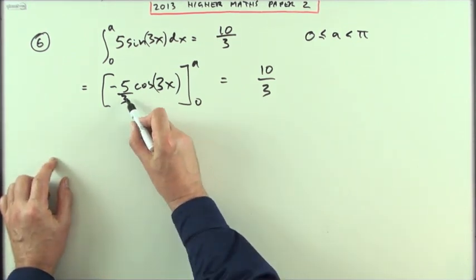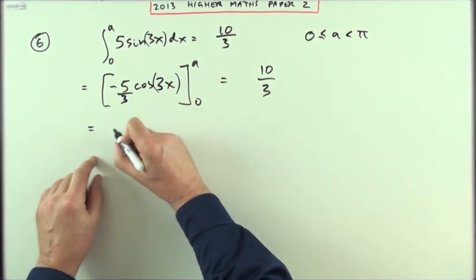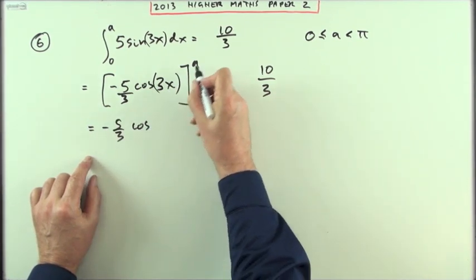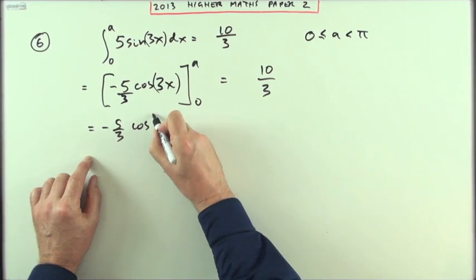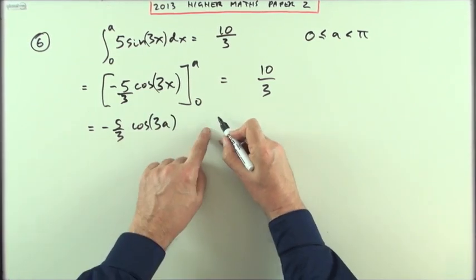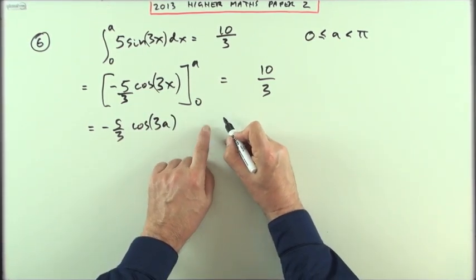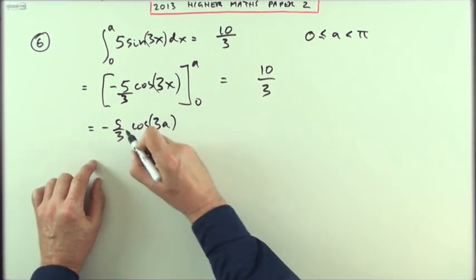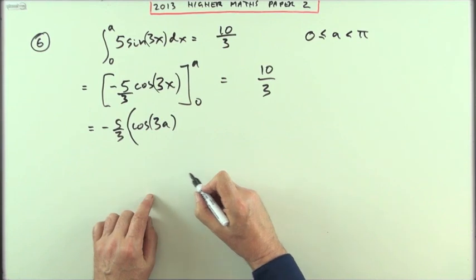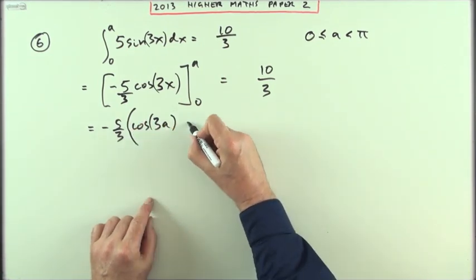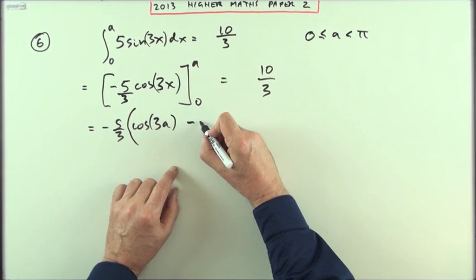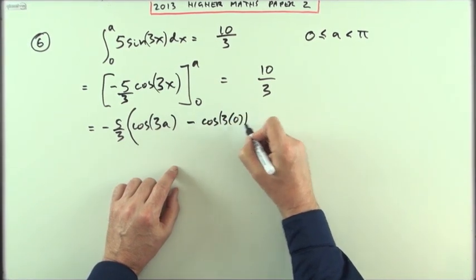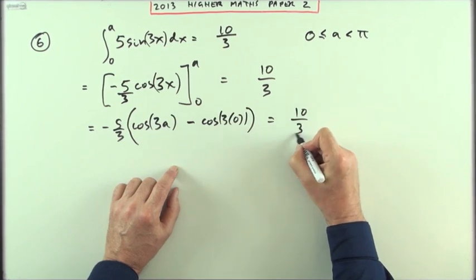Well that's going to be a common factor in both of these. If I was to write this out I would have negative 5 thirds of cos of 3a minus negative 5 thirds of cos of 3 times 0. Since the negative 5 is appearing in both of them it would probably be handier to keep it out, so I've got negative 5 upon 3 of that minus negative 5 upon 3 of cos of 3 times 0 equaling 10 upon 3.